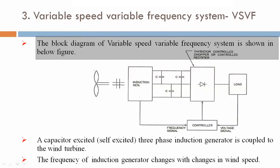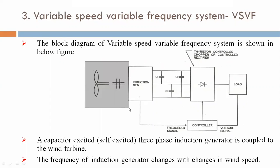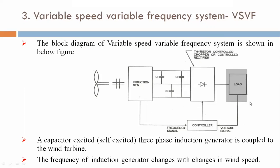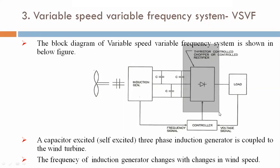The block diagram of the variable speed variable frequency system is shown in the figure below. This is the turbine portion connected to an induction generator. Here a capacitor bank is present. A controller is also present, along with a thyristor-controlled chopper or controlled rectifier connected to the load. The controller receives a frequency signal from the induction generator and a voltage signal from the load.